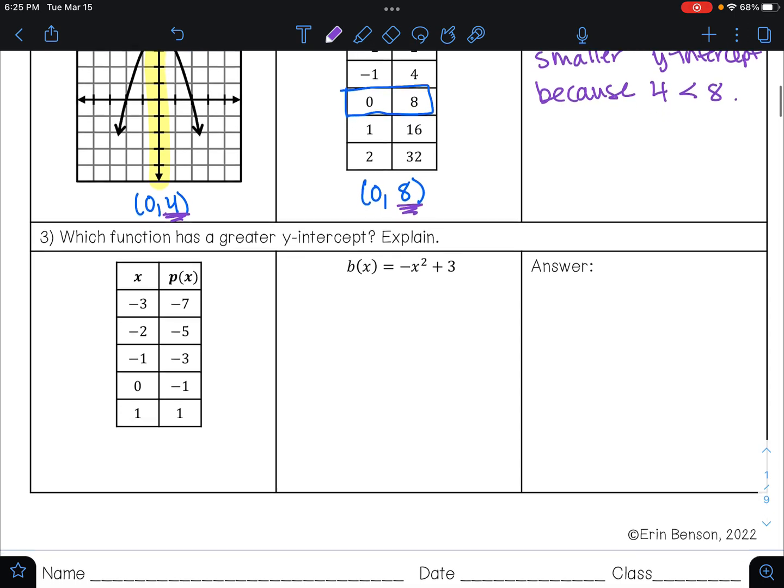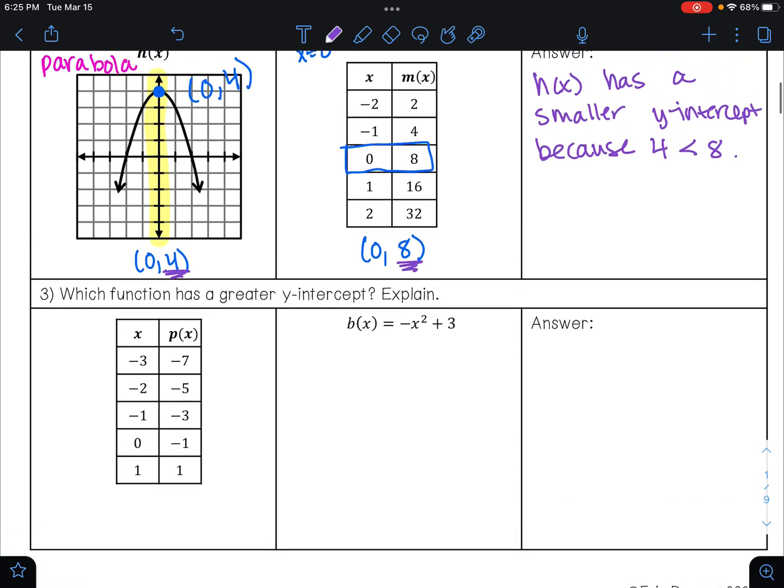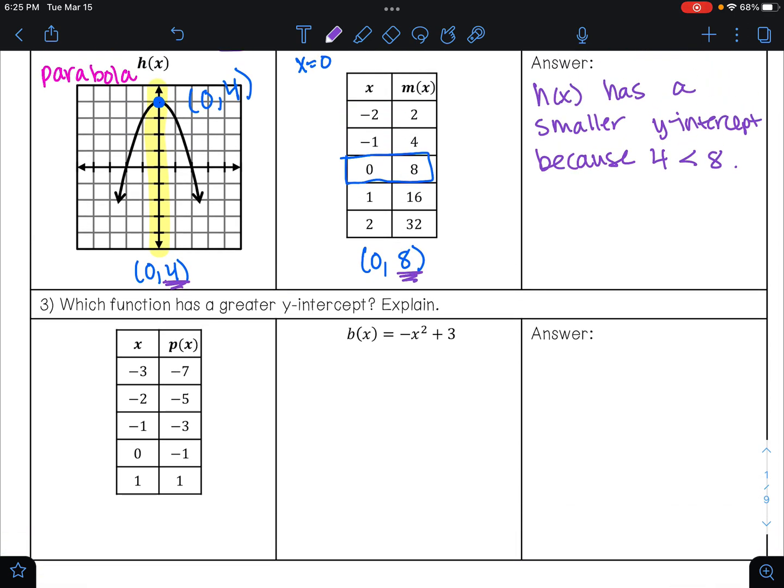And then if we look at example 3, it says which function has a greater y-intercept? Explain. For p(x), we are given a table of values. And we know that in a table of values, your y-intercept will always be where x is 0.